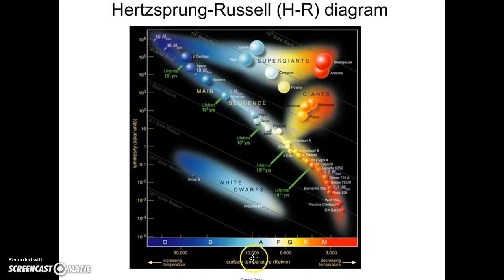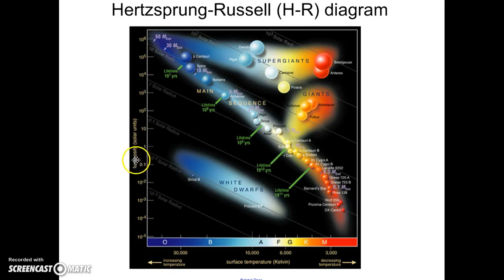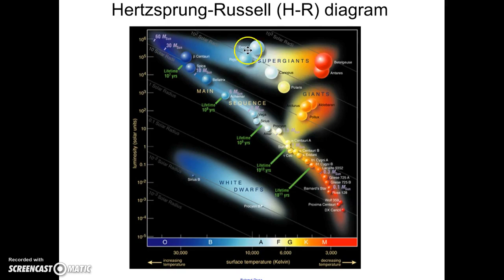On the x-axis, we have the surface temperature of the stars, and that corresponds to the color of the star. On the y-axis, we plot the luminosity, or how bright the star is compared to the sun. And so we end up with different classifications — different groupings of stars — based on these characteristics.